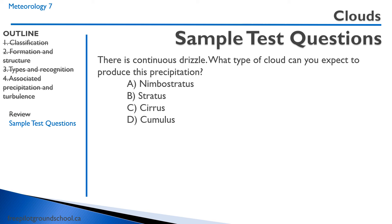Question two: there is continuous drizzle — what type of cloud can you expect to produce this precipitation? Remember, drizzle is associated with stable air with very small water droplets. A — nimbostratus: that's the correct answer — layer-type rain clouds. B — stratus: partially correct, but technically since they are producing precipitation, they are classified as a nimbo cloud. C — cirrus: not correct, those are made of ice crystals, very high up, and rarely produce precipitation. D — cumulus: not correct, cumulus produces large water droplets intermittently — that's what we get with rain showers.